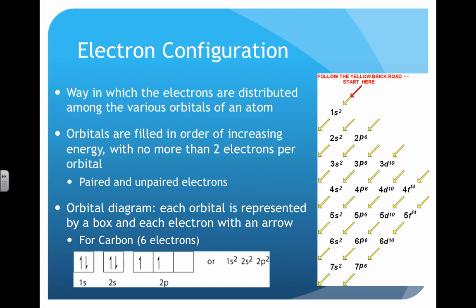We don't put any more than two electrons in any particular orbital. But remember certain sublevel types have different numbers of orbitals associated with them.